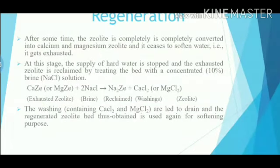Now, regeneration. After some time, the zeolite is completely converted into calcium and magnesium zeolite and it ceases to soften water, i.e., it gets exhausted. At this stage, the supply of hard water is stopped and the exhausted zeolite is reclaimed by treating the bed with a concentrated 10% NaCl solution. Now, the washings containing CaCl₂ and MgCl₂ are led to drain and the regenerated zeolite bed thus obtained is used again for softening purpose.